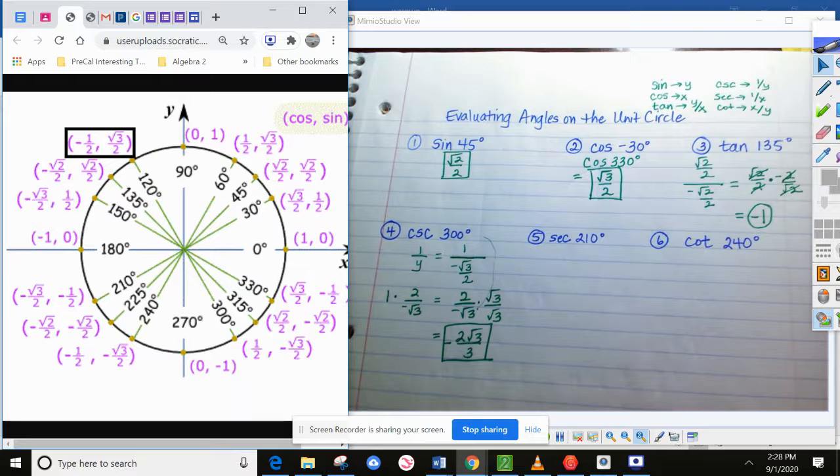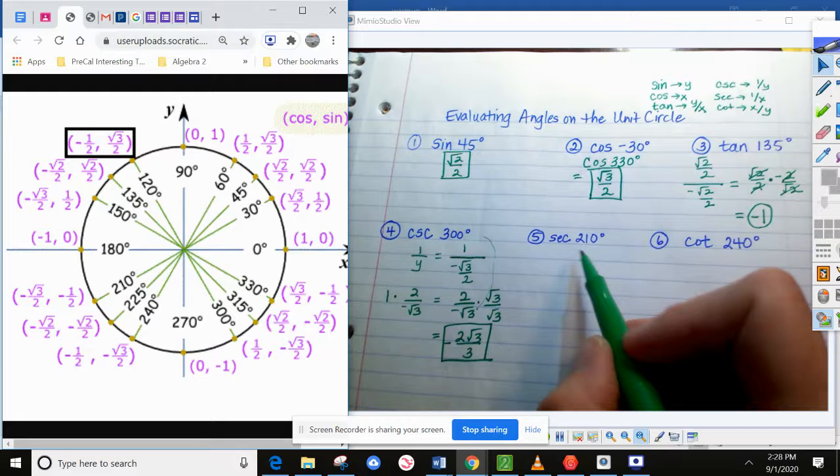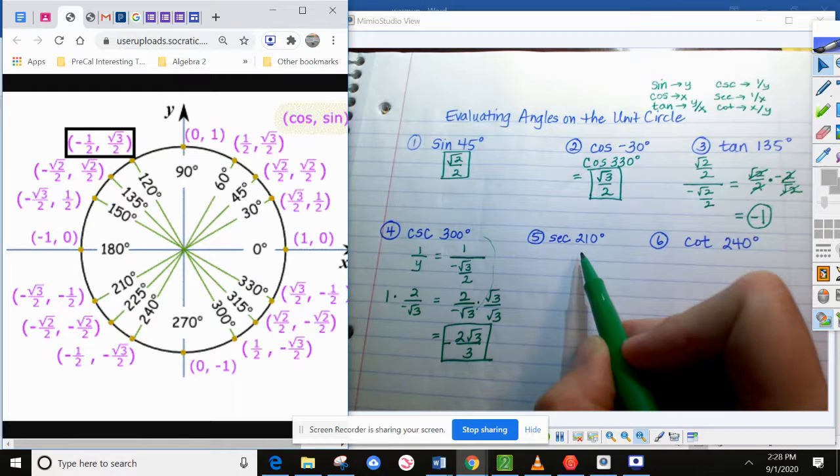Secant of 210. All right. So now, again, you could go to 210 and find the x coordinate and do one divided by that. But I'll tell you what's going to happen is when you get to that x coordinate and you do one divided by that, it's just going to turn into the same thing as flipping the x coordinate from the unit circle.